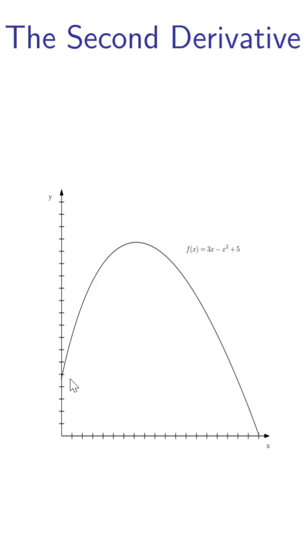Here there is a nonlinear function that increases first and then decreases. It clearly has a maximum here. Now, how does this maximum relate to the second derivative?